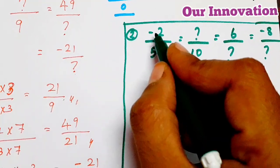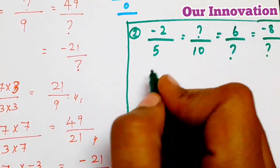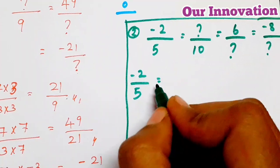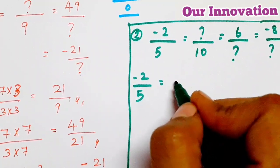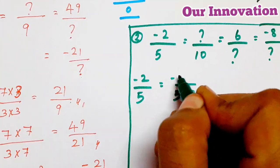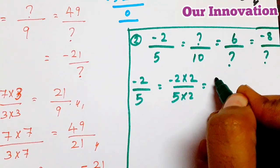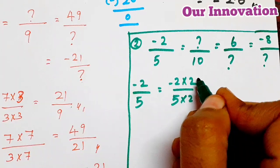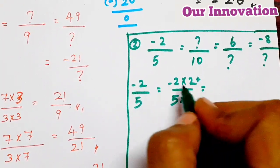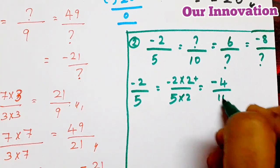Second one: minus 2 by 5. You can find this. So minus 2 by 5 is equal to — now there is 10; 5 into 2, 5 2s are 10; then minus 2 into 2. So it is equal to minus into minus — see, this minus is equal to plus. Then minus into plus, minus into minus: minus 4 by 10. So this is the first answer.